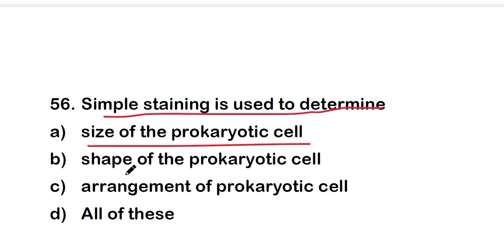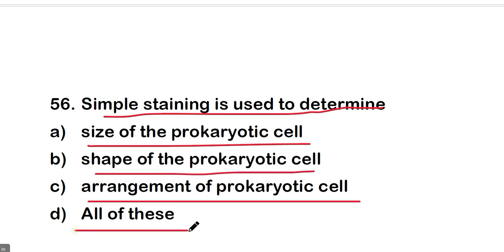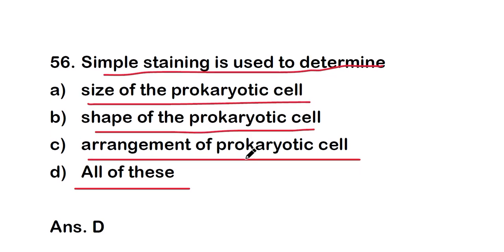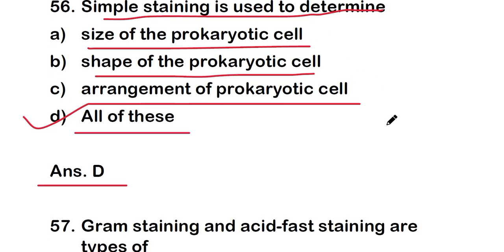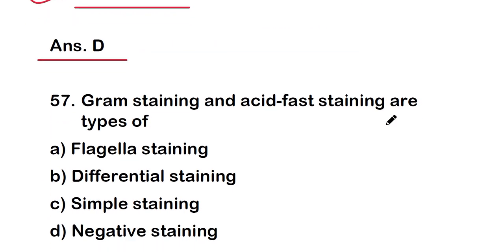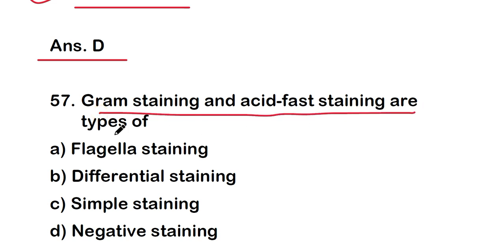Next question: simple staining is used to determine — size of the prokaryotic cell, shape of the prokaryotic cell, arrangement of the prokaryotic cell, or all of these? The right answer is option D — all of these. Simple staining is used to determine size, shape, and arrangement of prokaryotic cells.